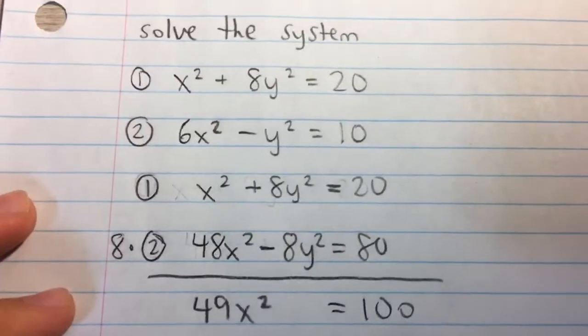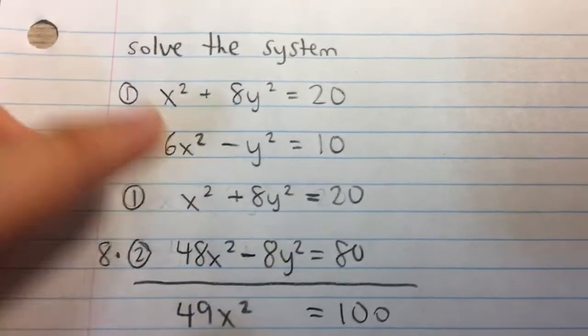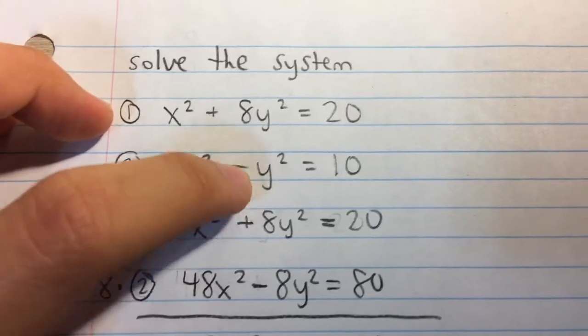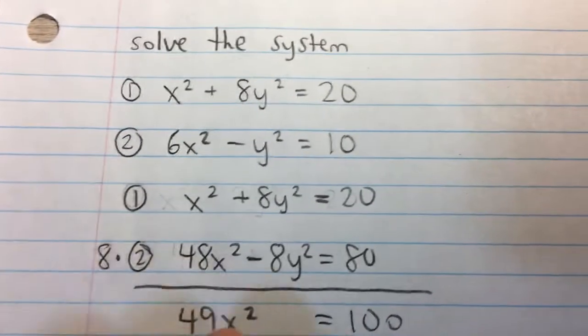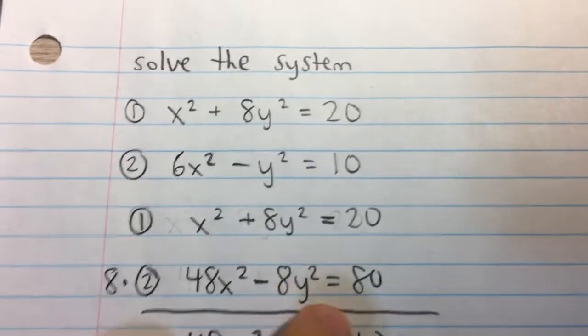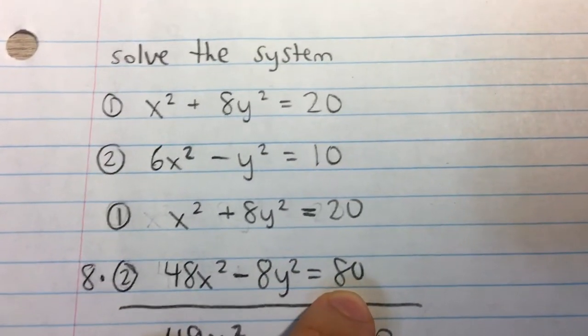So here, what we can do is we can either eliminate x or y, but in this case I chose y. So to eliminate the y variable, I have to multiply the second equation by 8. Multiply everything in the second equation by 8, so I have 48x² - 8y² = 80.